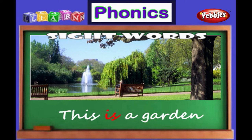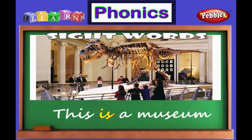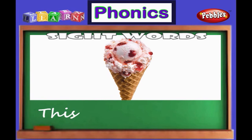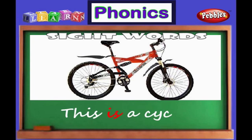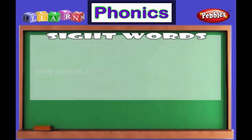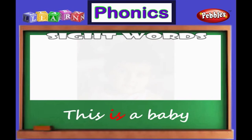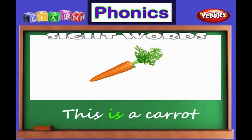This is a garden. This is a museum. This is an ice cream. This is a cycle. This is a baby. This is a carrot.